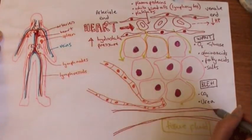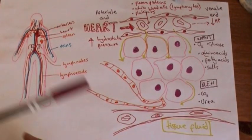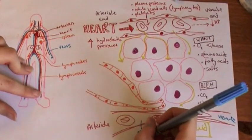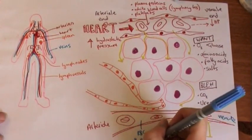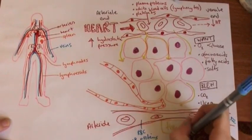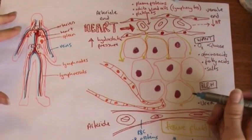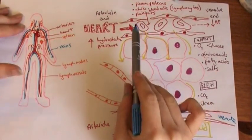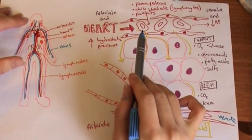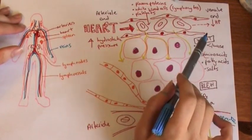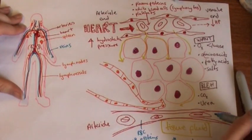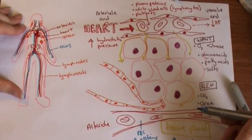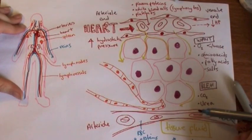After the plasma leaves to form tissue fluid, what we're left with inside the capillary is red blood cells, plasma proteins, and white blood cells — lymphocytes. This is going to have a really really low water potential. At the arterial end the high hydrostatic pressure has a more important effect than the low water potential — it dominates and pushes fluid out. But at the venule end, we've got a really really low water potential and now low hydrostatic pressure.